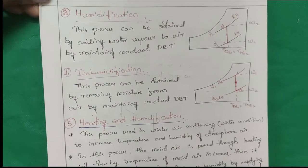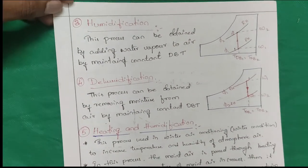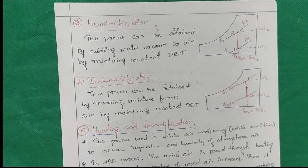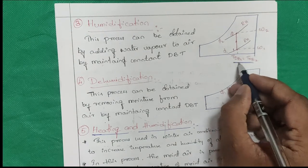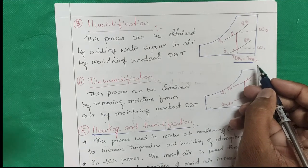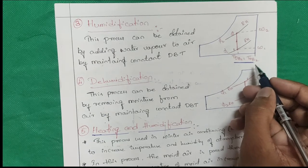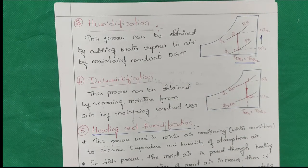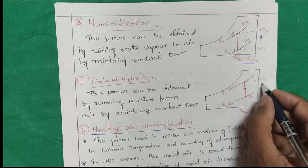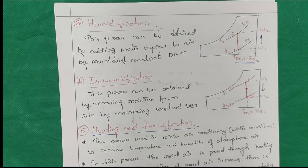What is humidification and dehumidification? Humidification means you increase the moisture content — you add water vapor to the air while maintaining the dry bulb temperature constant. That is very important. Humidification: increase the humidity, increase the moisture content. Dehumidification: at constant temperature, you reduce or remove the moisture content.